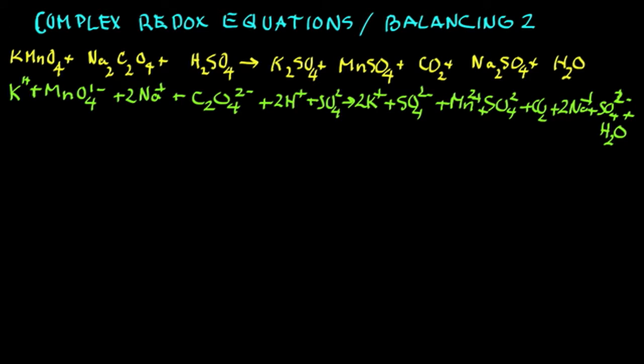Now we're going to remove all the spectator ions, those things that don't change. To do that, we need to find the oxidation numbers. Manganese in here, minus 2 times 4 is minus 8, and this is a plus 7 oxidation number. And over here, manganese is plus 2. So we see that has changed.